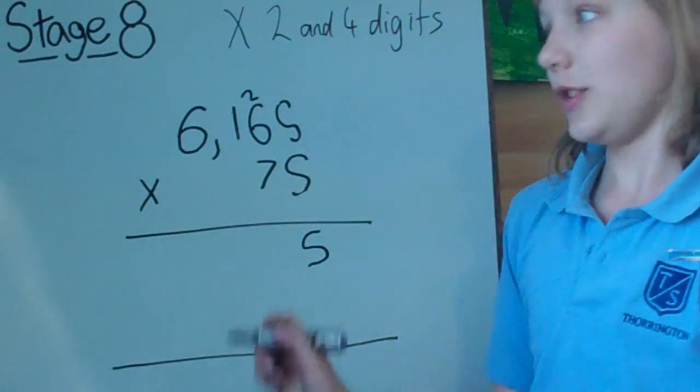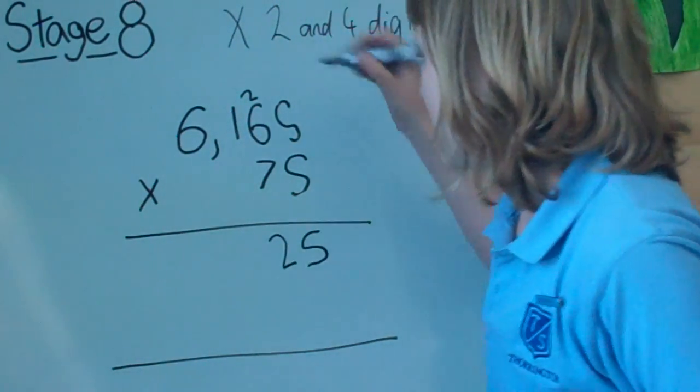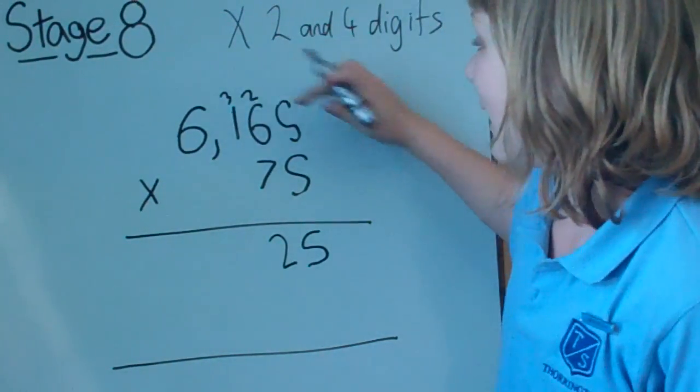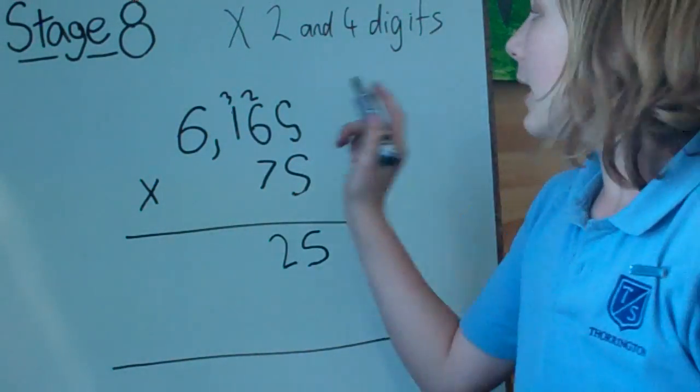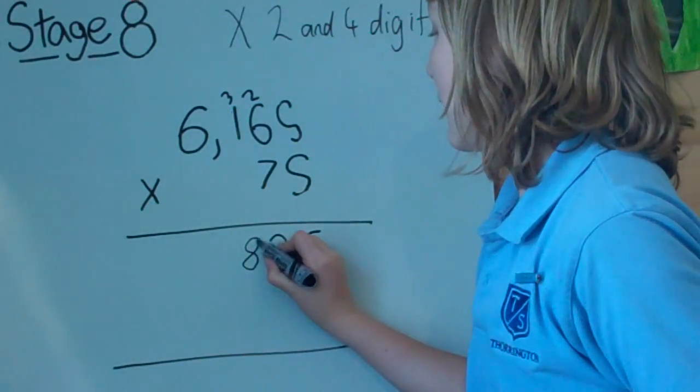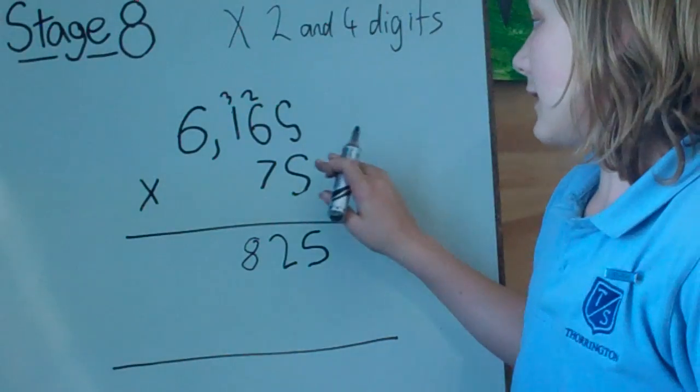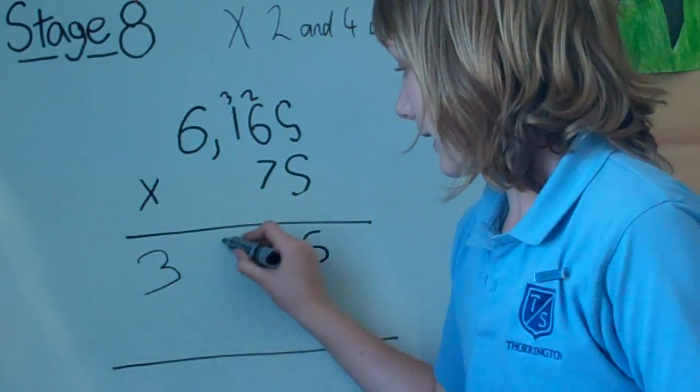6 times 5 is 30, plus 2 equals 32, carry the 3. 1 times 5 is 5, plus 3 is 8. And now 6 times 5 is 30, put the 30 down here.